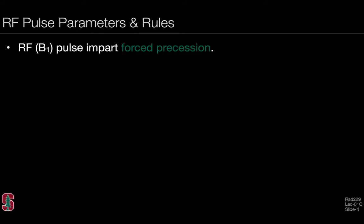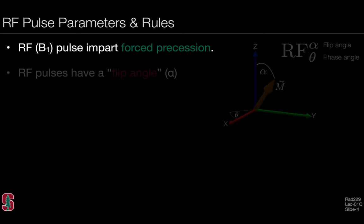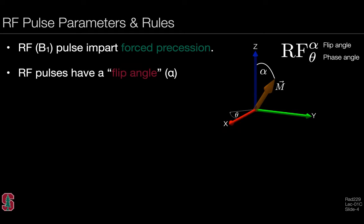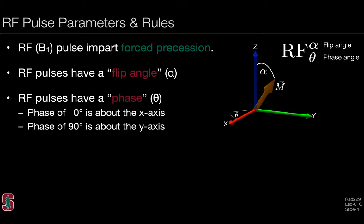Let's start by talking about the RF pulse parameters and rules. The RF B1 pulse imparts what we call forced precession, in distinction to free precession, which arises from spins being in the presence of the external B0 field. RF pulses have a flip angle, often called alpha, which measures how far the bulk magnetization has been perturbed from the z-axis. RF pulses also have a phase, often called theta. A phase of zero degrees indicates an RF pulse rotation about the x-axis, while a phase of 90 degrees indicates a rotation about the y-axis.